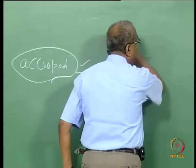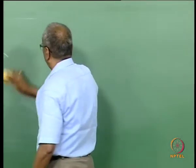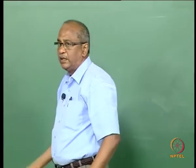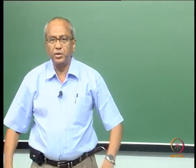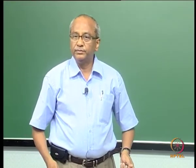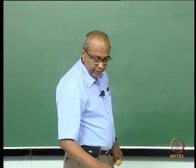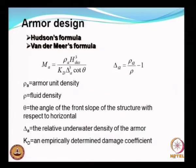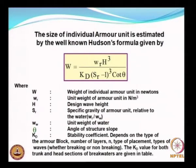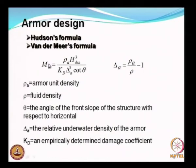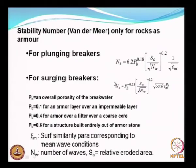These are options to consider during the planning stage. You have both Hudson's formula and Van der Meer's formula. In Hudson's formula, the expression gives weight, while in the Van der Meer formulation it is expressed as mass. K_D is the usual stability coefficient, and there is also a relative density term representing the underwater density.